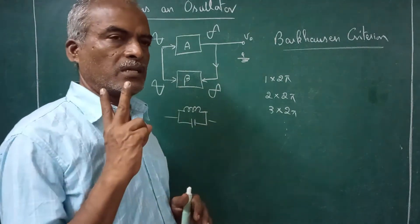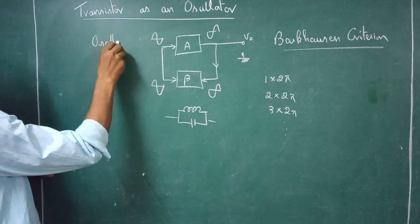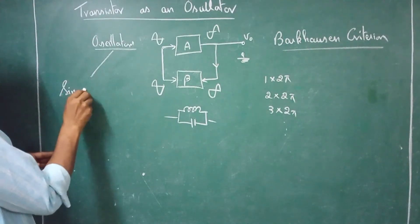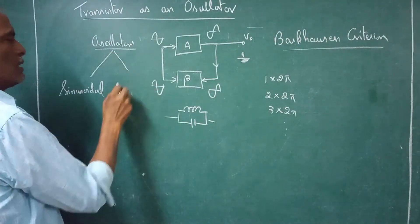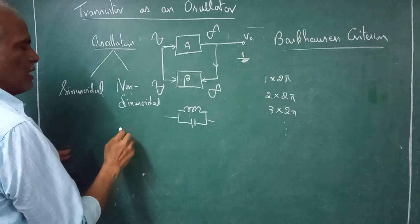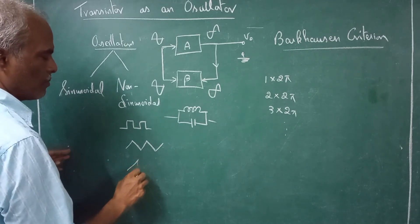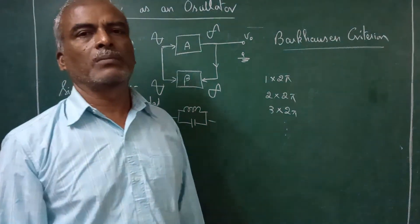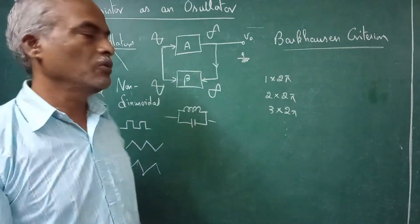In oscillators we have two types: one is sinusoidal — it produces sine wave — and the other is non-sinusoidal. Non-sinusoidal includes square waveform, triangular waveform, and sawtooth waveform. The sawtooth waveform is used in scanning of electron beams in television CRTs generally — for horizontal scanning and vertical scanning we use sawtooth waveform.